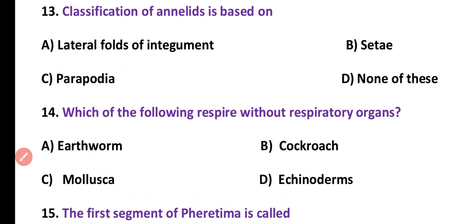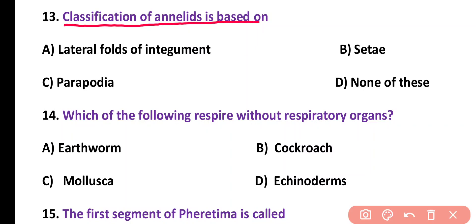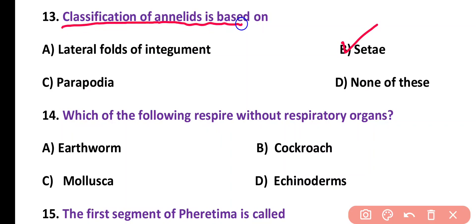Question number 13. Classification of annelids is based on: lateral folds of integument, setae, parapodia, or none of these. Correct answer is option B. Classification of annelids into different classes such as Polychaeta, Oligochaeta, and Hirudinaria is based on the presence of setae.